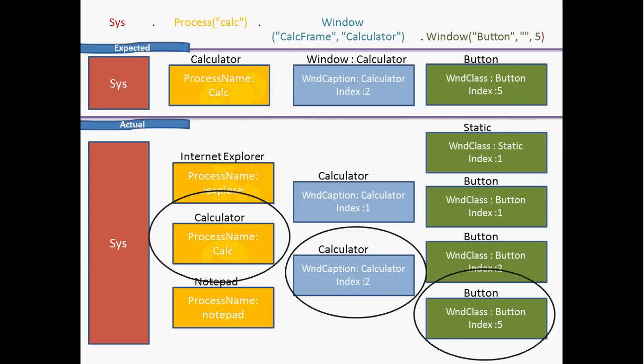TestComplete now understands this is the expected button. The next event is to click on that button. The button has additional properties like X, Y, width, and height. TestComplete uses these to identify the position of button 5 within the calculator using X/Y coordinates and height/width, then clicks on the center of the button.